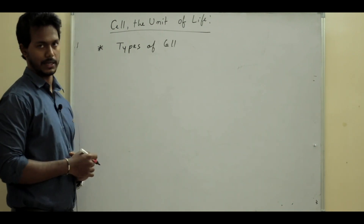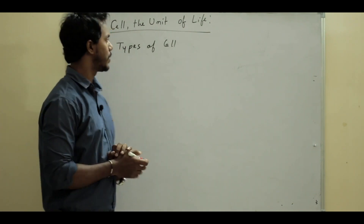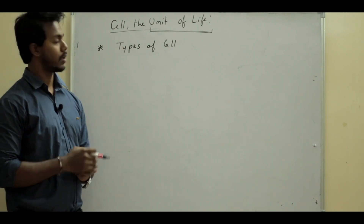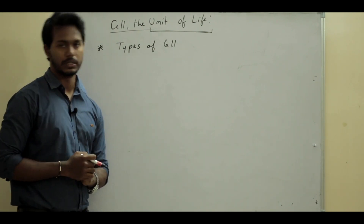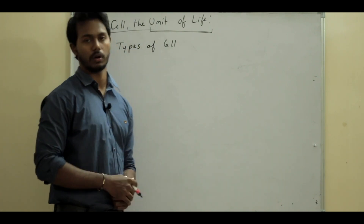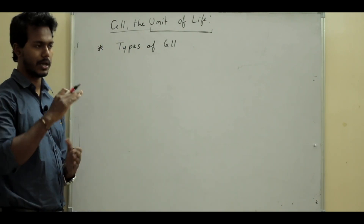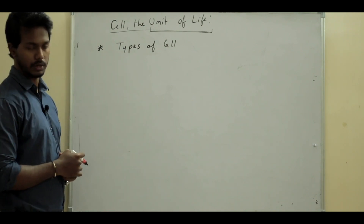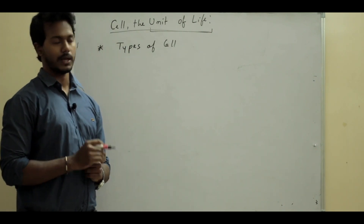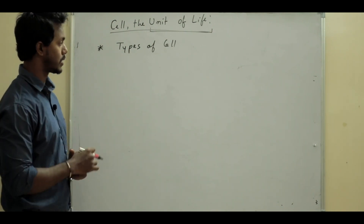The cell is a unit of life. Robert Hooke discovered the cell for the first time - he discovered a dead cell. Living cells were discovered by Anton van Leeuwenhoek for the first time. The first living cell he observed was a bacteria cell - an Euglena cell.